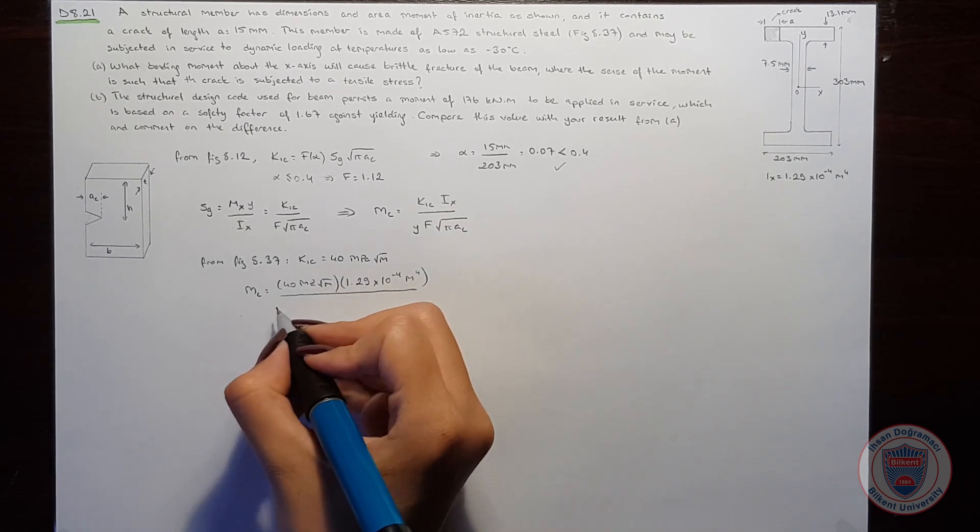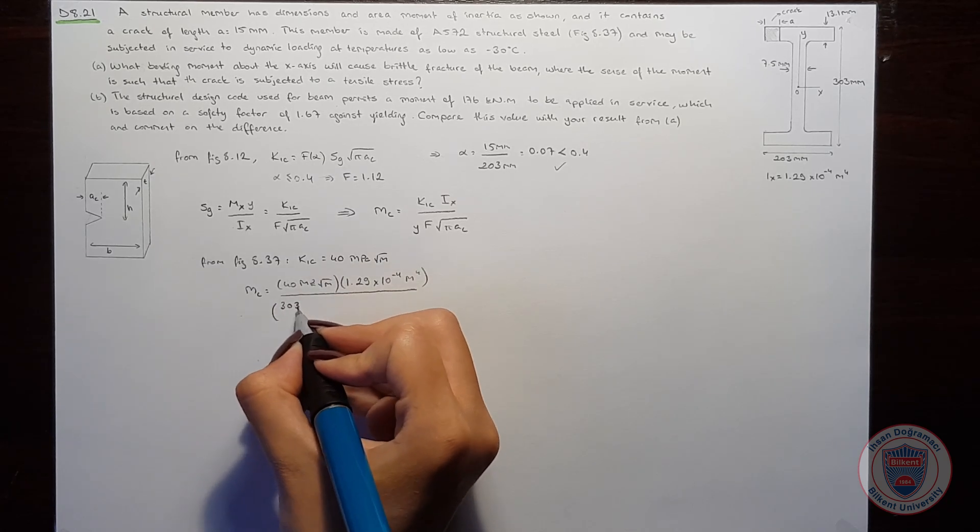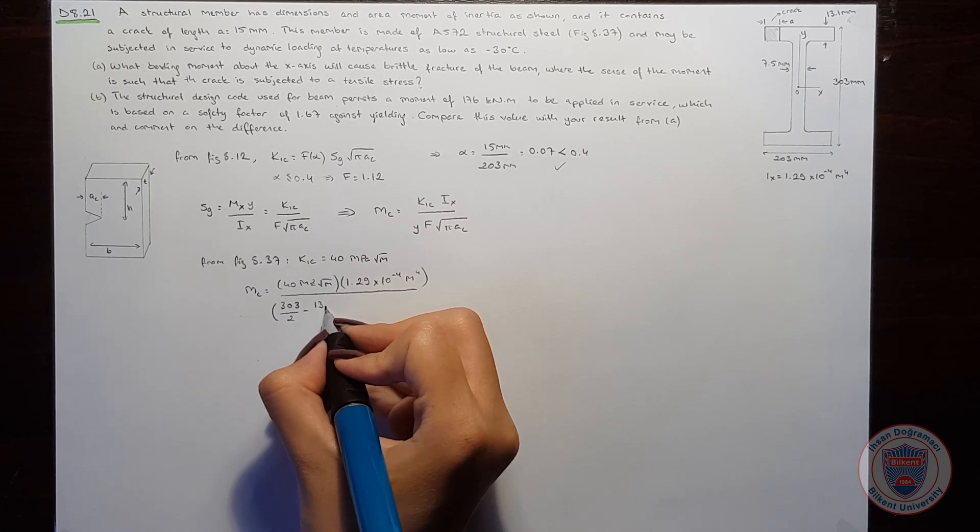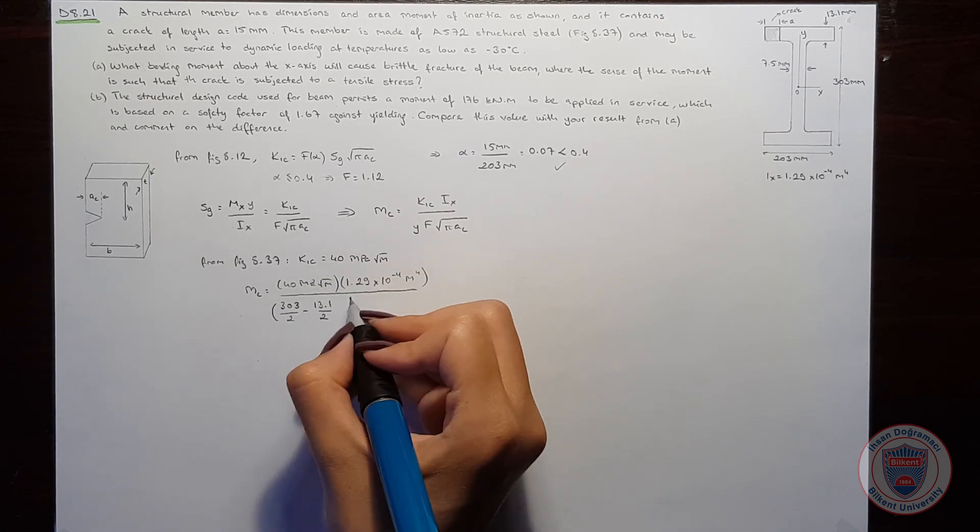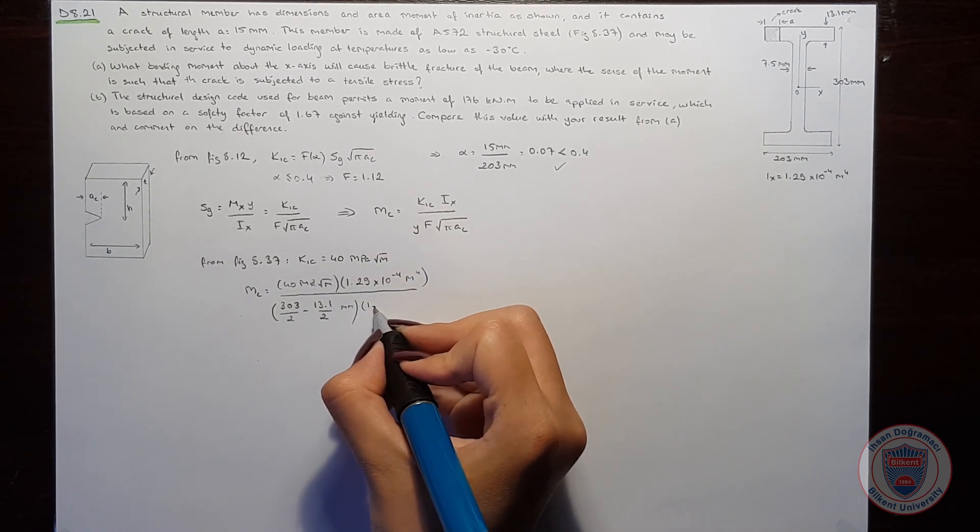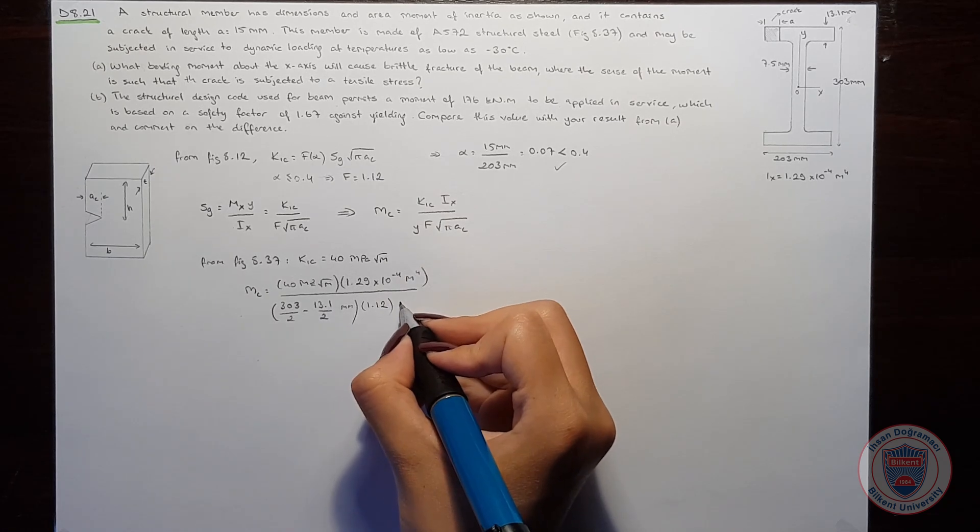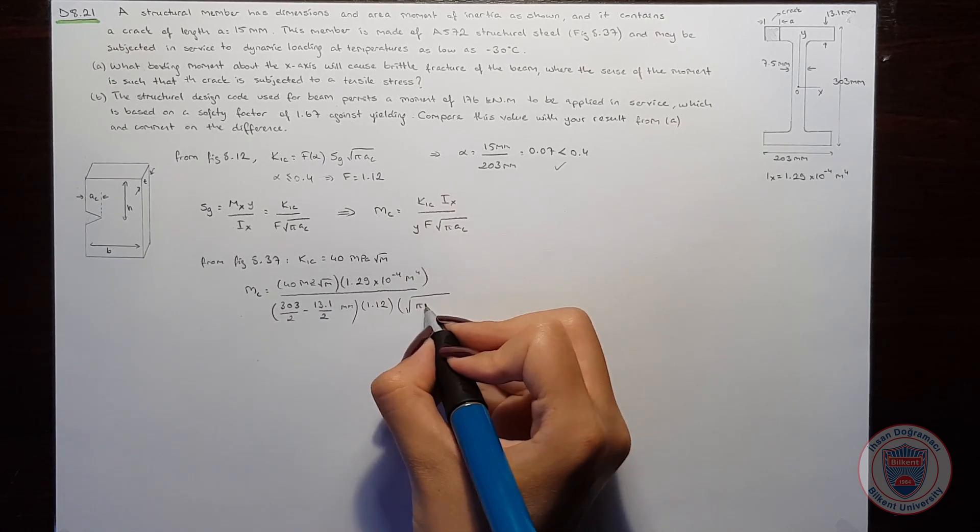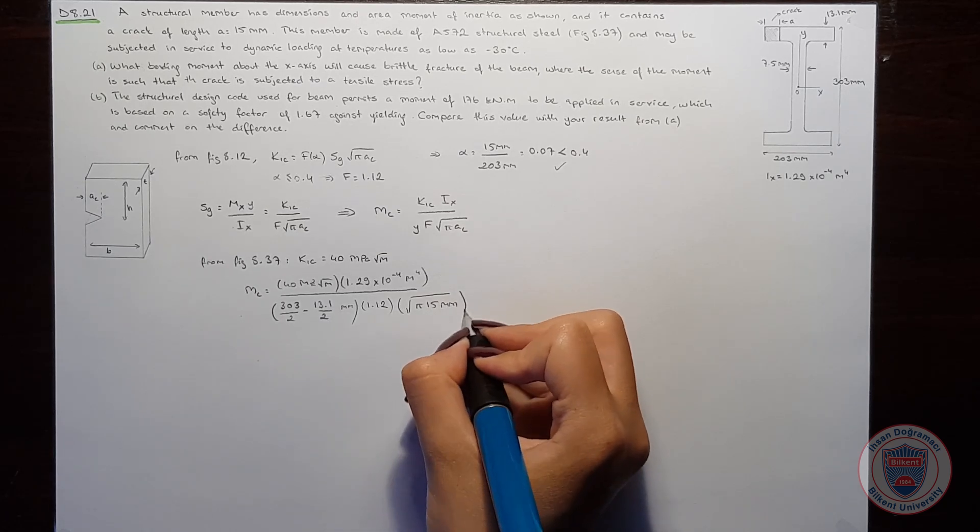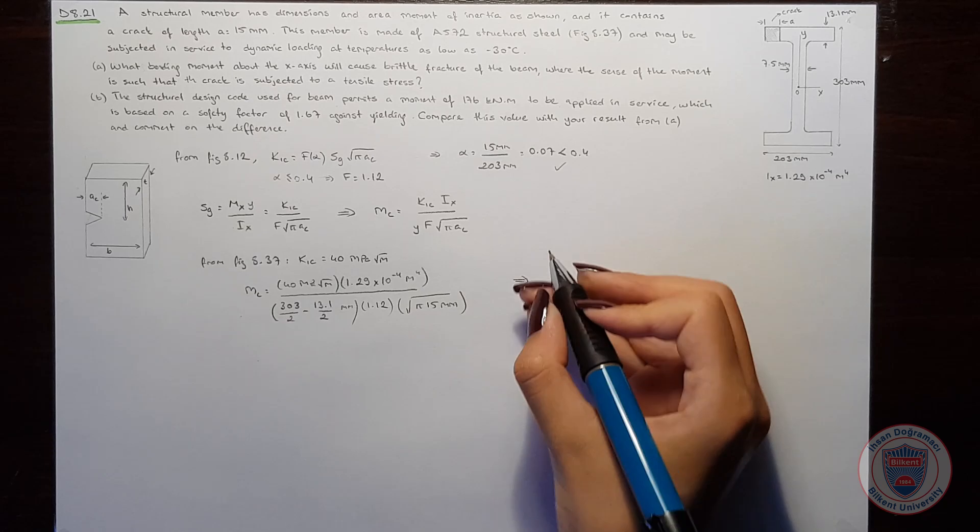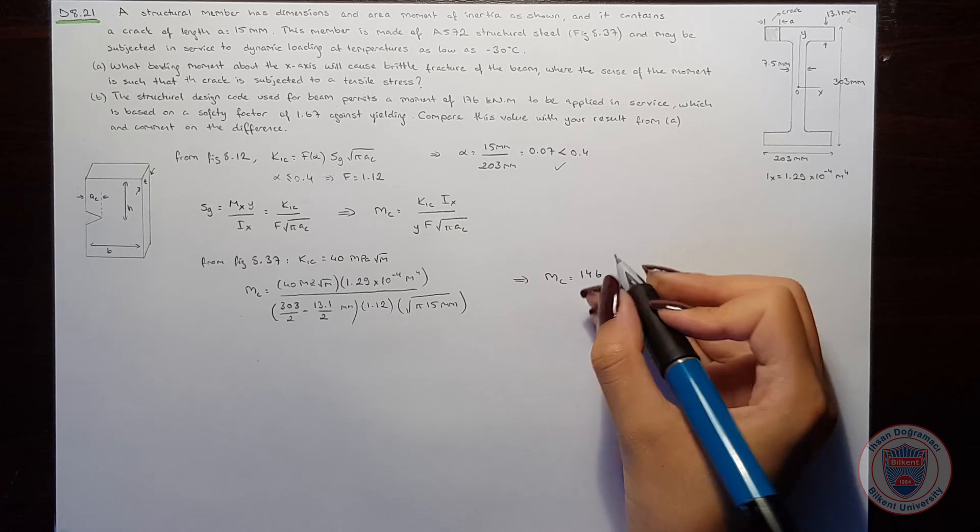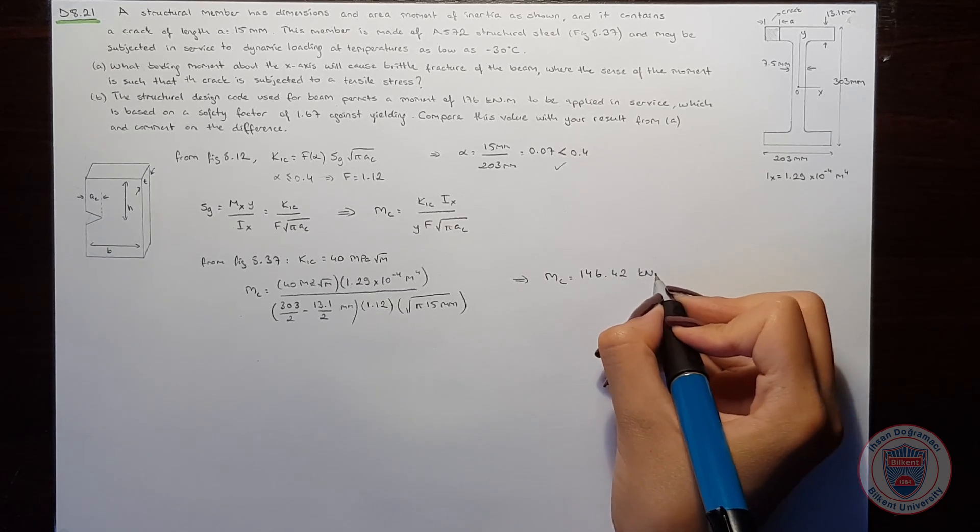So when we compute this equation, we will get mc equal to 40 MPa square root meters times 1.29 times 10 to the power of minus 4 meter to the power of 4, over 203 over 2 minus 13.1 over 2 mm, times 1.12 times square root of pi times 15 mm, which is the crack length. And this equation gives mc equal to 146.42 kNm.